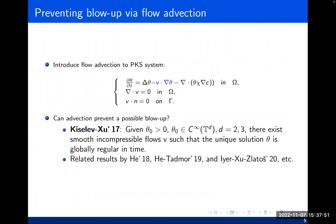Later, we considered introducing a flow advection term to the system. Here we have an advection term: velocity dot-gradient theta. The velocity is assumed to be incompressible, and the normal component of velocity on the boundary is zero — so nothing enters or exits through the boundary. The question raised here: can advection prevent finite-time blow-up? Back in 2017, Kiselev and Xu showed that for given smooth initial theta on a periodic domain, there exists a smooth incompressible flow V such that the unique solution theta is globally regular in time — an affirmative answer.